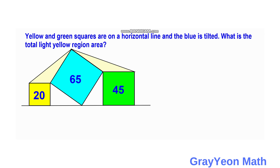The first thing we have to consider is that the yellow square and the green square are on a horizontal line, so they make a 90 degree angle with the horizontal line. We form a right triangle between these two squares against the blue square.